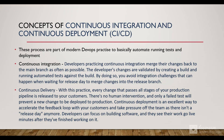The code is merged to the main branch as soon as tests are passed. Continuous delivery means that as soon as our branch gets merged to the higher branch, deployment gets started automatically. That deployment will only stop if there is a failed test. Continuous deployment is an excellent way to accelerate the feedback loop with customers - developers can focus on building software and see their work go live minutes after finishing it.